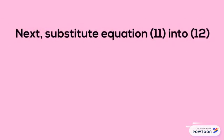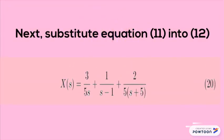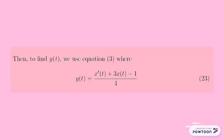Next, substitute equation 11 into 12 and we get X(s) equal to 3 over 5s plus 1 over (s minus 1) plus 2 over 5 times (s plus 5). Then, by using the inverse Laplace transform, we get the solution for x(t) which is 3/5 plus e to the power of t plus 2/5 times e to the power of negative 5t. Then, to find y(t), we use equation 3 where y(t) equals 2x'(t) plus 3x(t) minus 1 over 4.